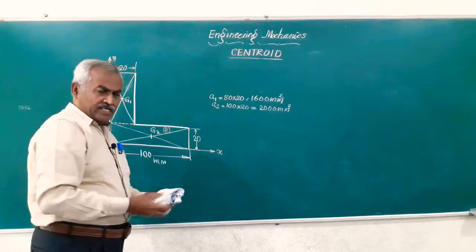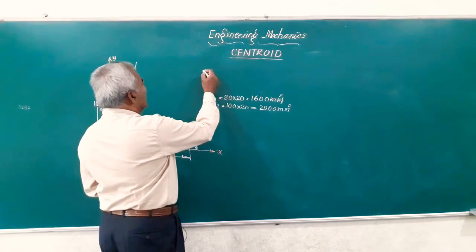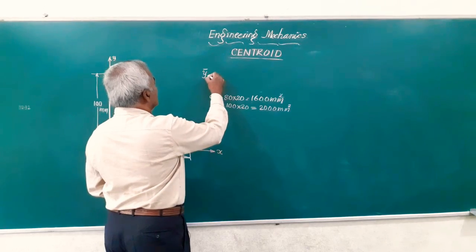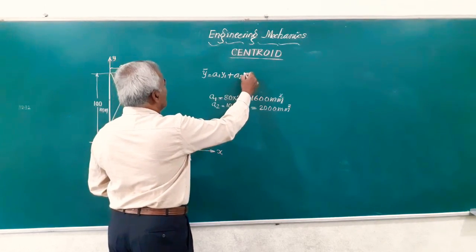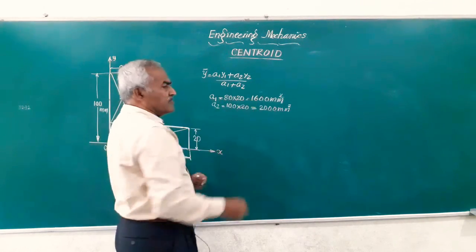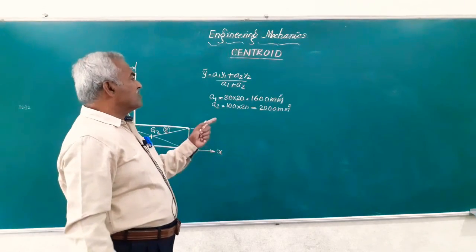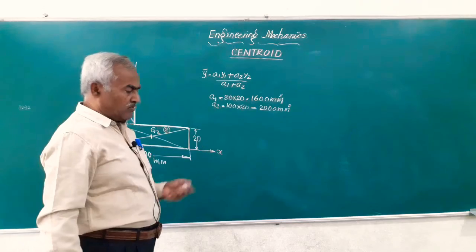Friends, for that we have a similar formula given by the formula that is y bar is equal to a1 y1 plus a2 y2 divided by a1 plus a2. Already we have calculated what are the values of a1 and a2. Now let us see how to find out y1 and y2.